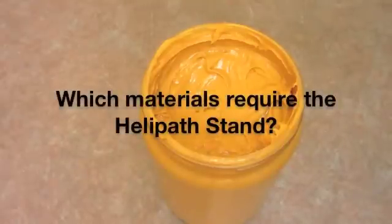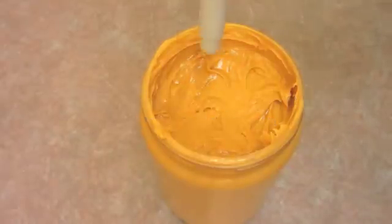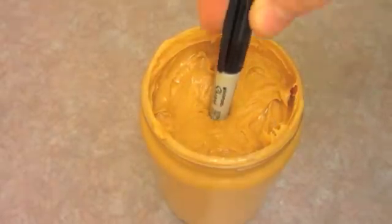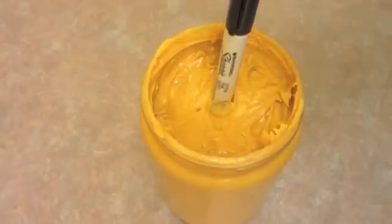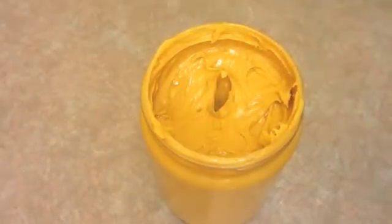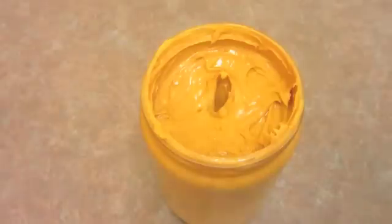If you are not sure your material requires our Helopath Stand, try sticking a blunt object such as a pen or pencil into the sample and pull it out. If the material does not completely fill back in on itself and leaves a hole, your material is appropriate for our Helopath Stand. This indicates that your material has a yield, which means a certain amount of force must be applied to it before it can begin to flow.